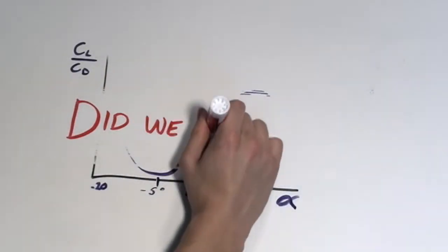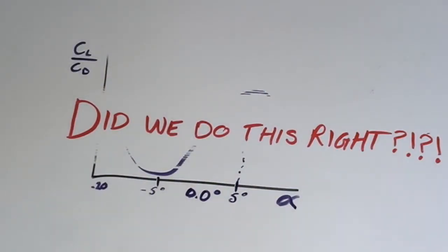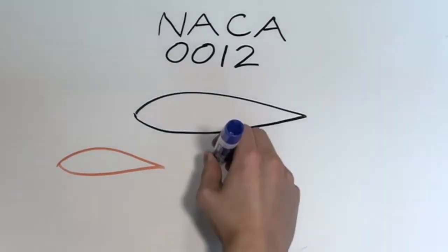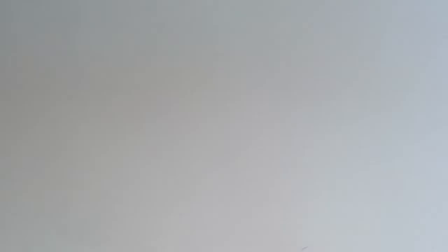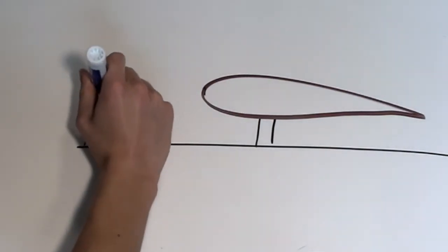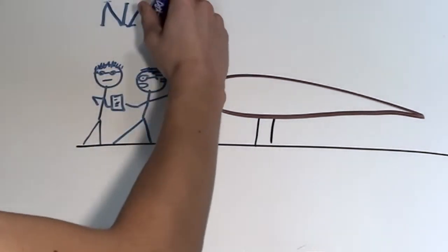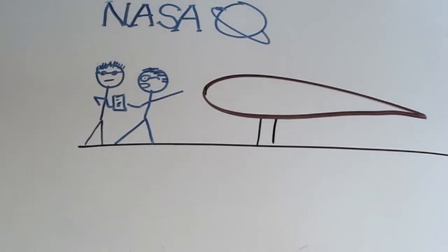To ensure that our results were correct, we compared our results to experimental and analytical data. As the NACA-12 airfoil shape is a well-known and commonly used airfoil shape, there is lots of data available. Firstly, our results were compared to experimental results. NASA has performed many experiments on the NACA-12 airfoil to determine the relationship of the coefficient of lift and angle of attack.